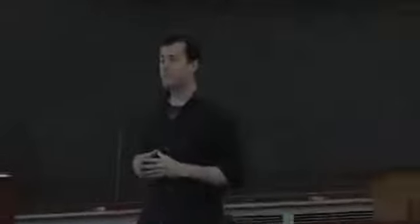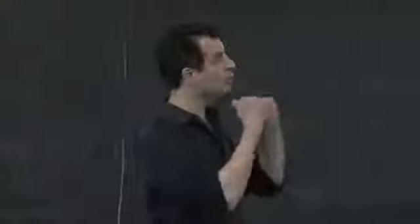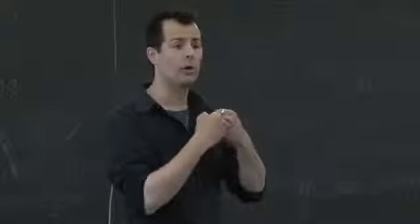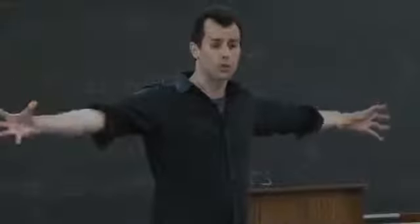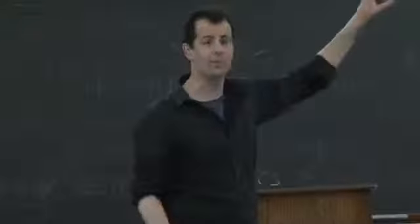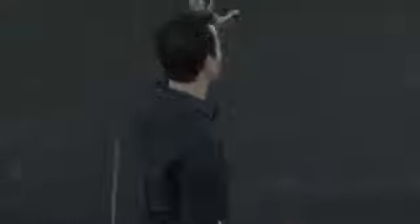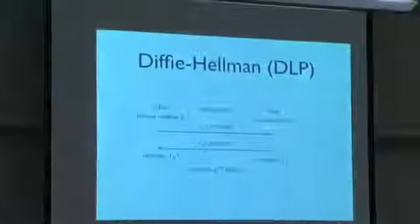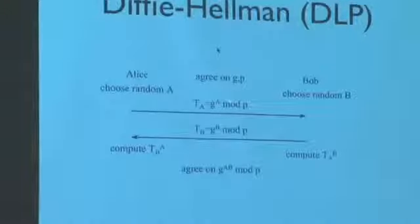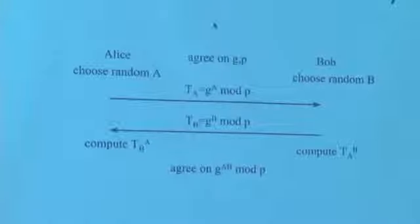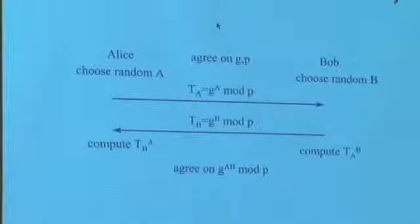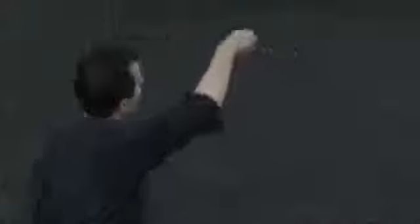Alice computes G to the A mod P — let's call that T_A. She sends that across the wire: not A, not G, not P, but the computational result of that expression. Bob does the same thing with B, computing T_B. At this point, Alice has A and T_B, and Bob has B and T_A. Thanks to the ability to multiply exponents, both sides can now compute the same shared value.